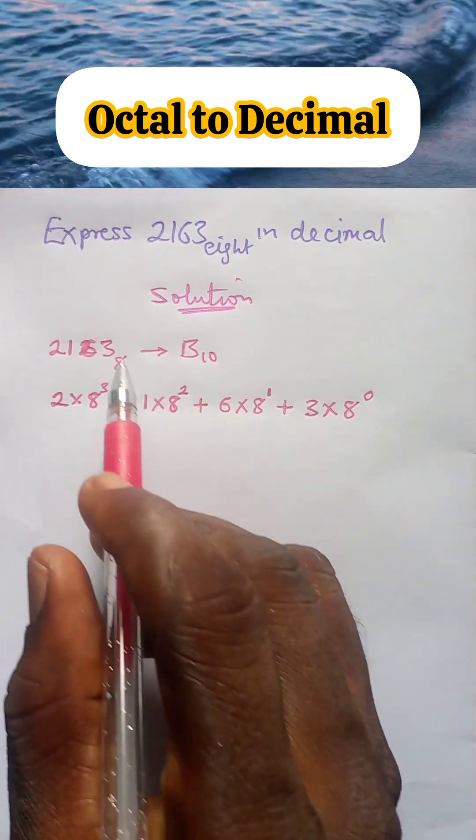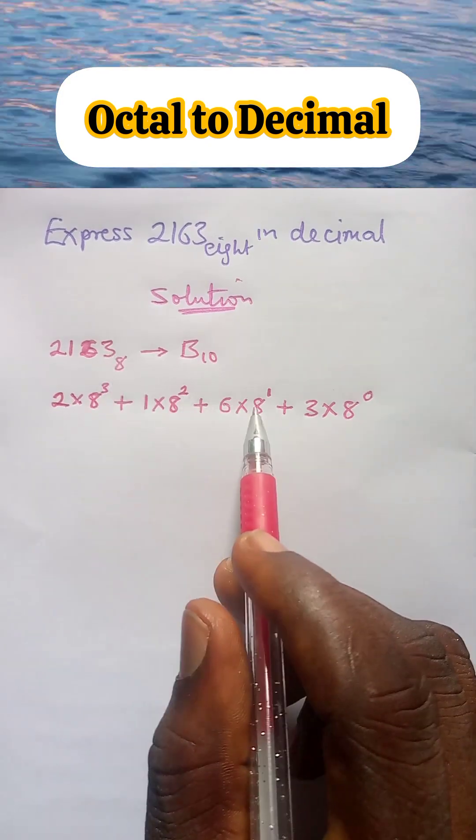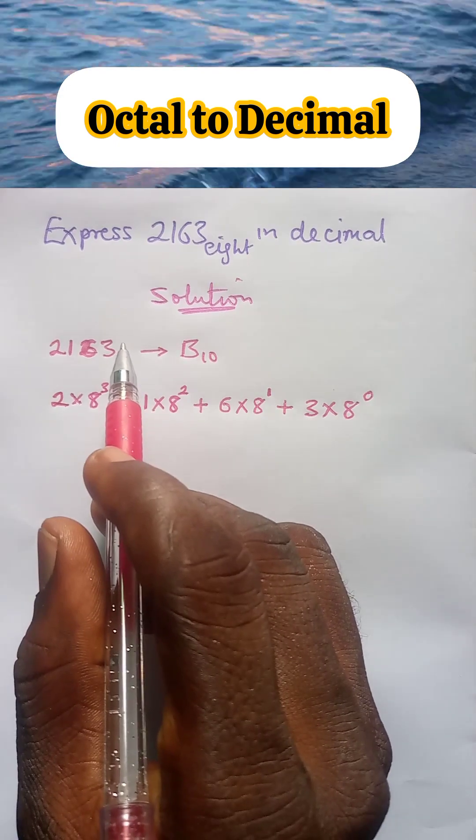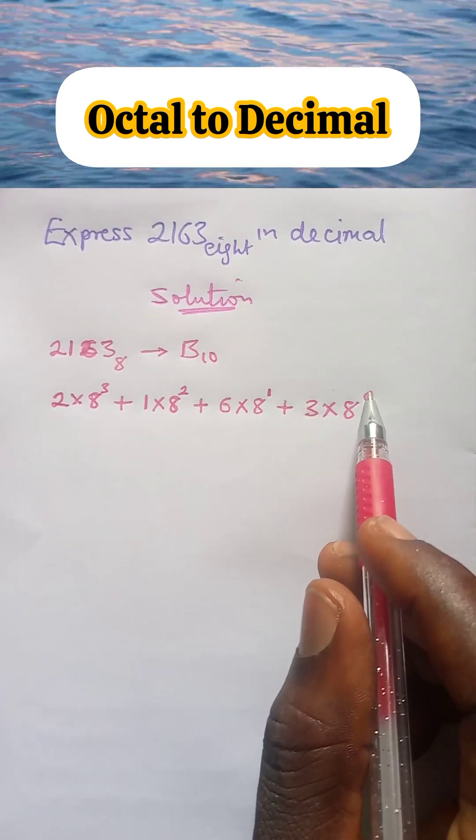Then use 6 to multiply 8, we are left with 1 digit, so we raise 8 to power 1. And then 3 to multiply 8, we are left with no digit, hence we raise 8 to power 0.